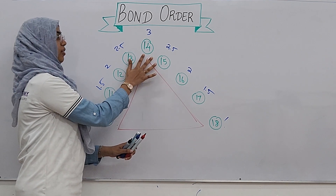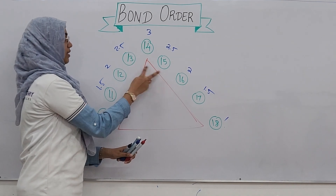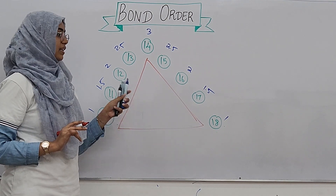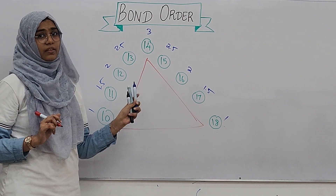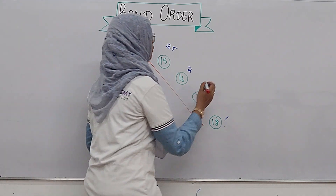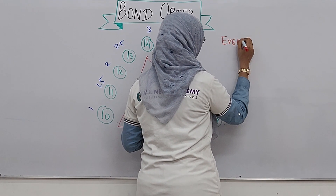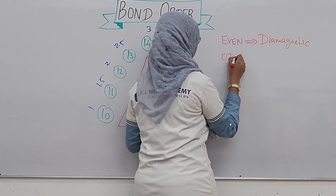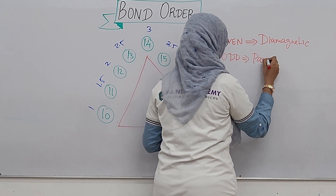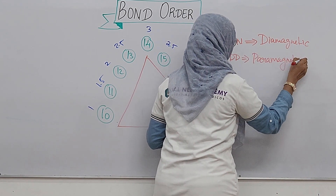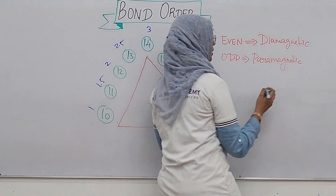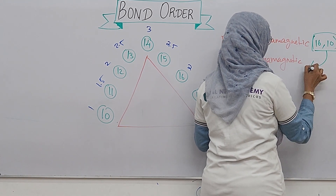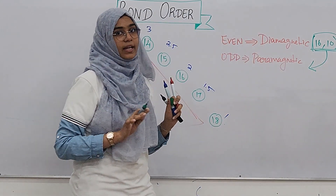Here are the electrons. For example, 14 electrons gives bond order 3; 13 and 15 give 2.5; 12 and 16 give 2. This triangle also predicts the magnetic nature. An even number of electrons is diamagnetic, and an odd number of electrons is paramagnetic. There are only 2 exceptions: 16 and 10 electrons are paramagnetic, even though they are even numbers.